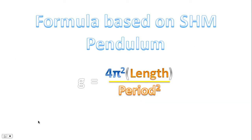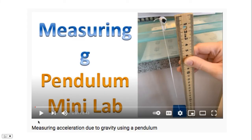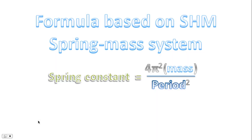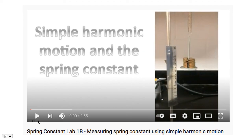Earlier on I discussed a formula based on simple harmonic motion for the pendulum — acceleration due to gravity is given by that expression. If you're interested in seeing how you can apply that formula to measure the acceleration due to gravity in a mini lab experiment, please watch this video. This formula can be used to determine the spring constant, given by that expression there. If you want to see an experiment that can be done to measure the spring constant, please watch this video here.